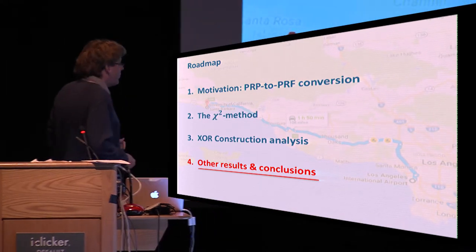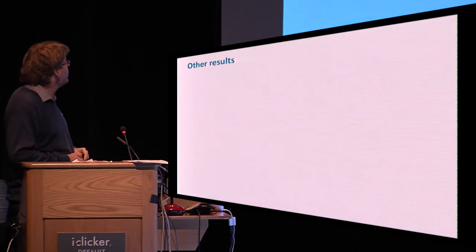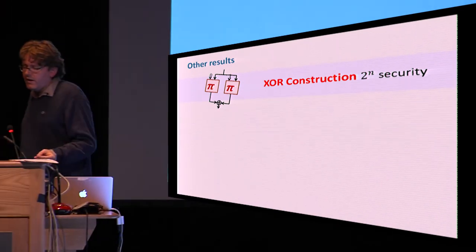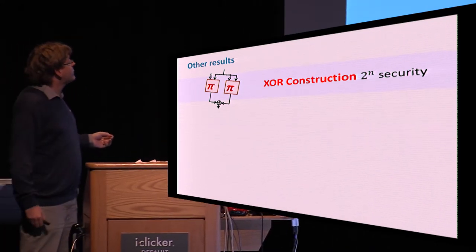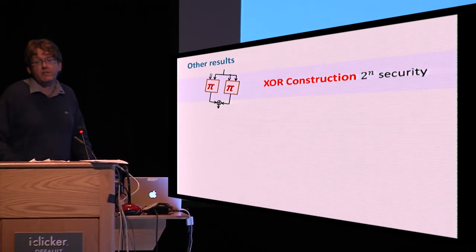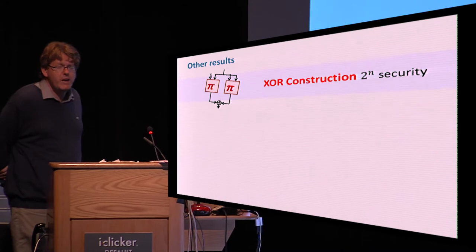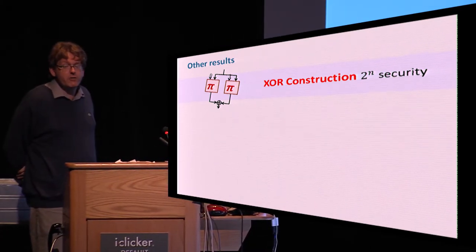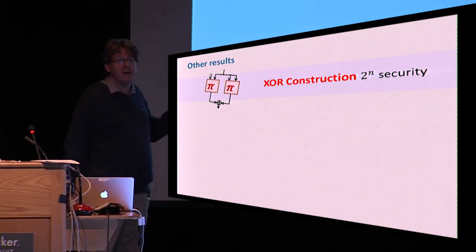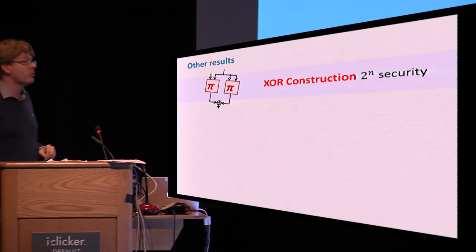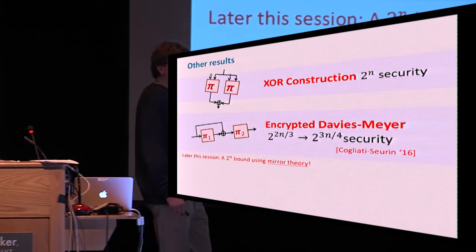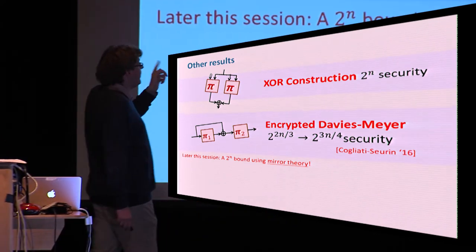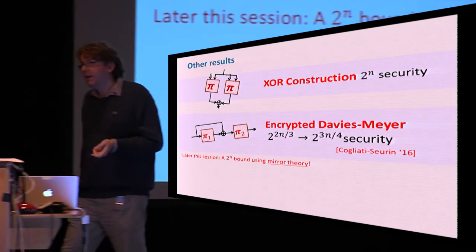Going towards conclusions, there are more results we present in the paper. We analyze the single-key XOR construction. Here the analysis is more painful, in particular because you have to deal with the fact that you don't have two independent permutations, so there's a higher degree of dependence, and this makes probability calculations somewhat more painful. But the high-level structure of the proof is very similar to what I have just shown you. The bound is weaker, and the main reason for this is actually not even due to our technique, but simply the fact that this is a construction that can never output zero, and therefore this makes the bound q/2^n tight. Another construction that we analyze in our work is the encrypted Davies-Meyer construction that was proposed by Cogliati and Seurin here at Crypto last year, and they propose a bound up to 2^(2n/3) security. We improve this to 2^(3n/4) security by using the chi-square method.